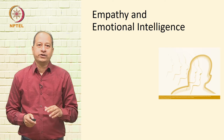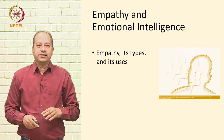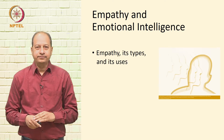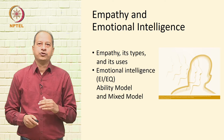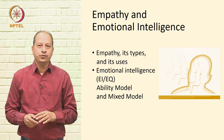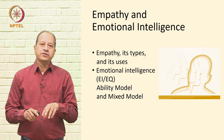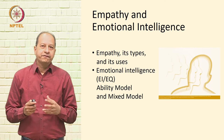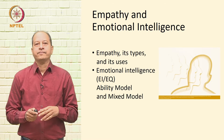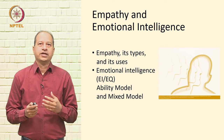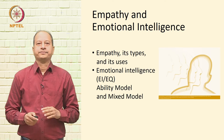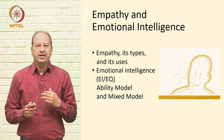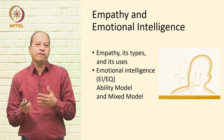So let's take a quick look at what I'm planning to do today. First, I'm going to talk about empathy, its types and its uses. Then I'll be talking about emotional intelligence, popularly known as EI or EQ, with a special emphasis on the ability model and the mixed model. By the end of today's lecture, you'll understand what empathy and emotional intelligence are and how they help us understand complex ideas associated with literature.